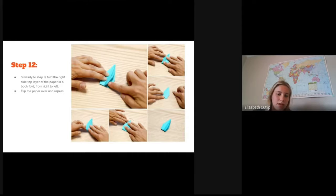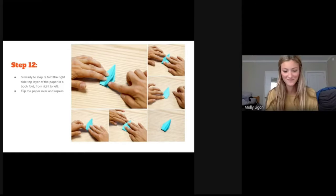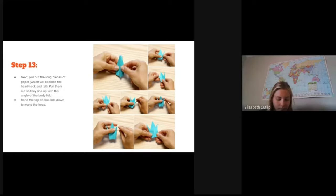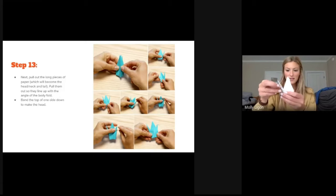All right. Step 12, similar to step nine, fold the right side top layer into the paper like a book from the right to the left and flip the paper over and repeat. So it should look like that again. So now it asks to pull out the longer pieces that are on the sides and then line up those edges with the edges that we just folded. So this is going to be like the head and the tail.